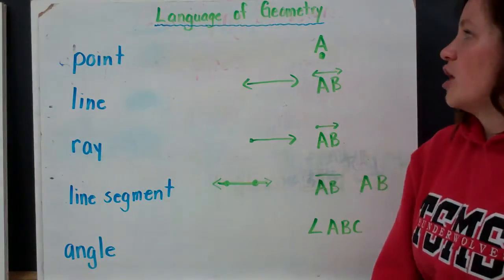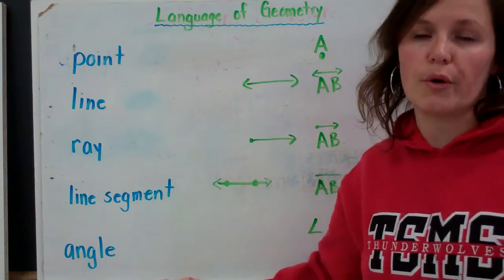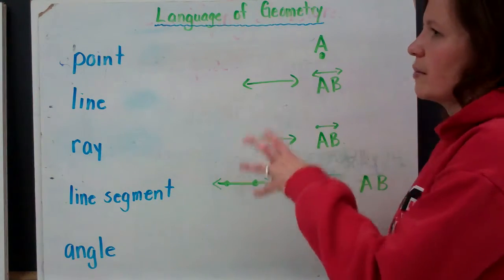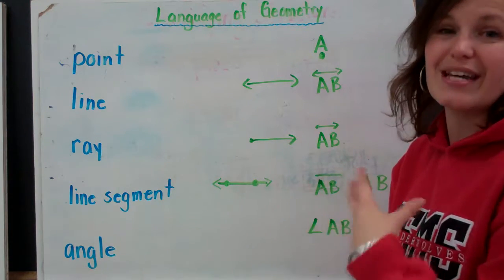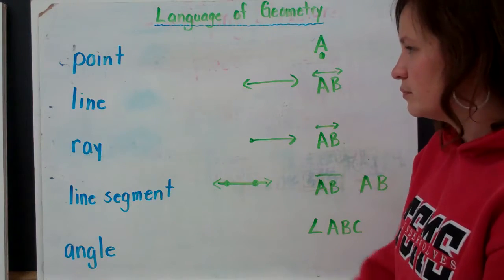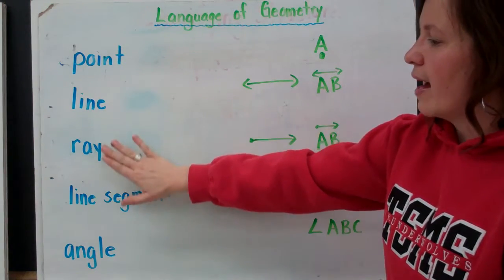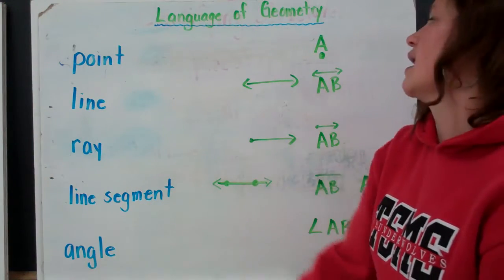Alright, the language of geometry. These are some terms that we're going to be using during this unit, and I wanted to demonstrate to you how you would correctly write these terms out when you're identifying them on a diagram. So, point, line, ray, line segment, and angle.